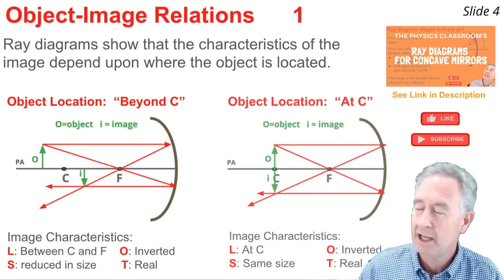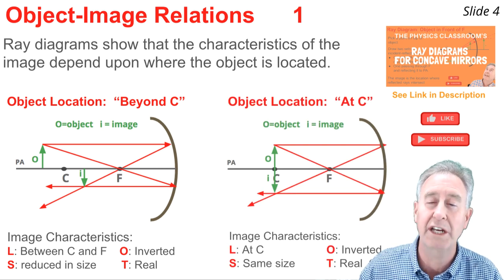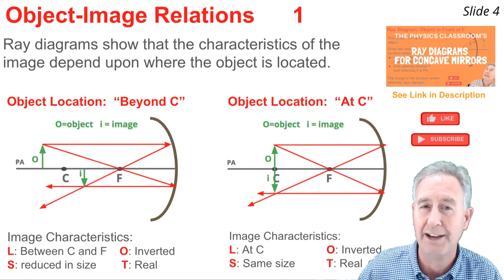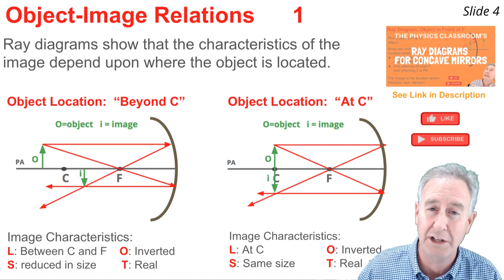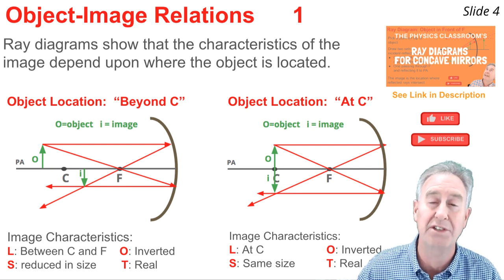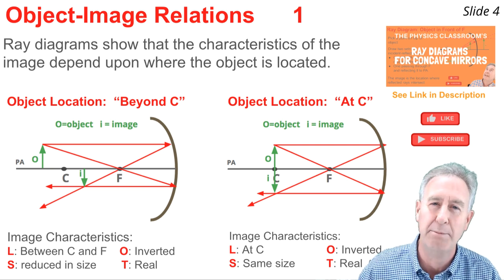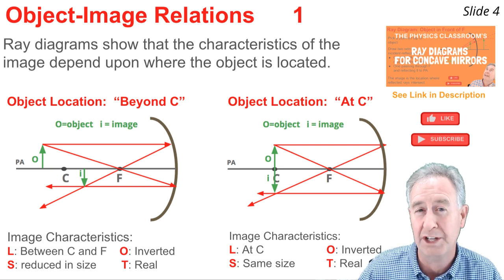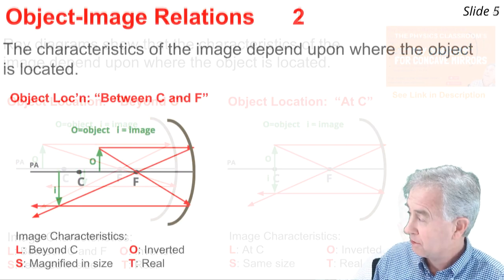In this situation, the object is located at the center of curvature, which places the image exactly at the center of curvature as well. Its orientation is once more inverted. The size is the same size as the object, and the type is real, since the reflected light rays are converging at this image location.